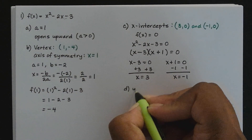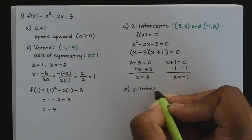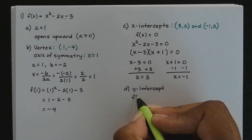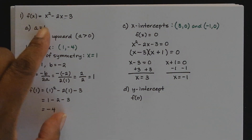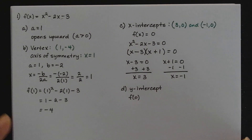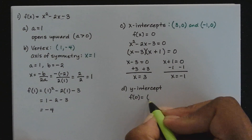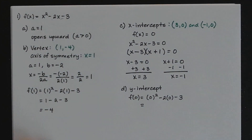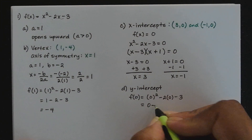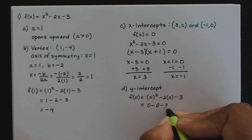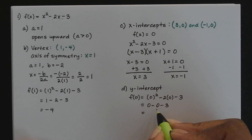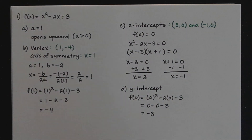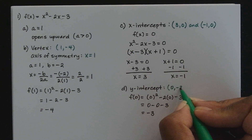Part D is finding the y-intercept. To find the y-intercept, we let x equal 0. That means we substitute each and every x in the function with 0. So f of 0 will be 0 squared minus 2 times 0, minus 3. 0 squared is 0, minus 2 times 0 is 0, minus 3. Simplifying: 0 minus 0 is 0, 0 minus 3 is negative 3. So my y-intercept is the ordered pair (0, negative 3).